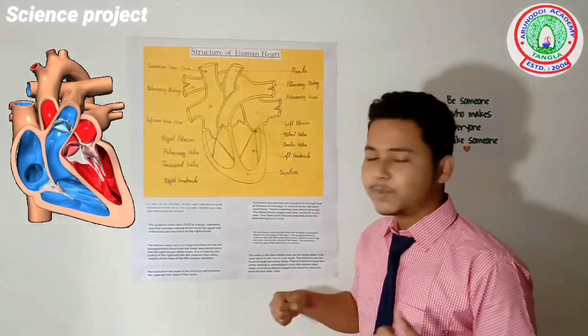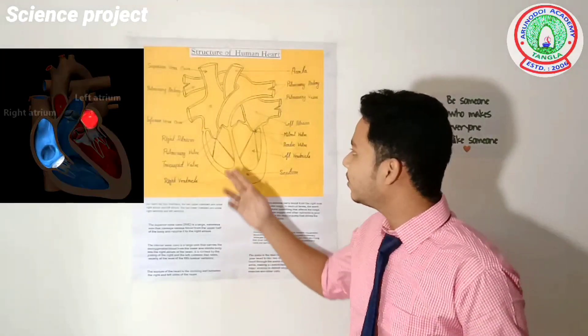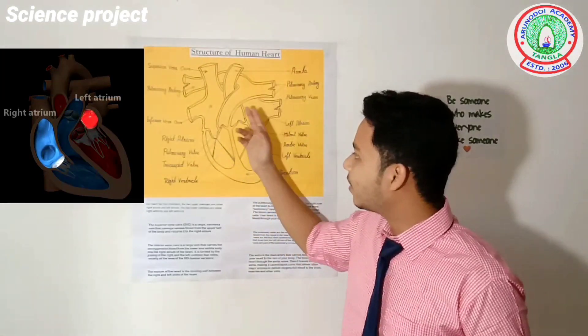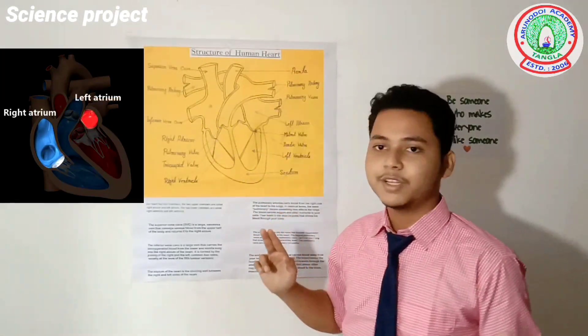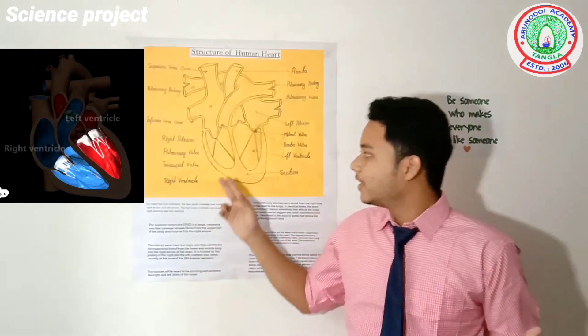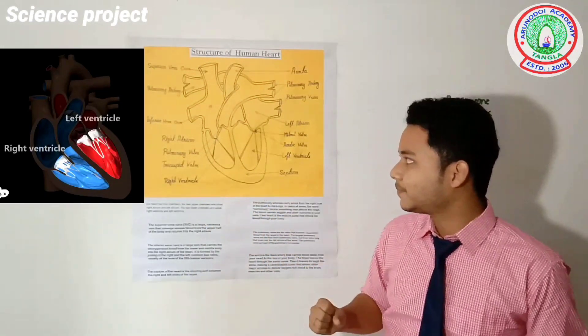The heart is basically divided into four chambers. The two upper chambers are called the right atrium and left atrium. The two lower chambers are called the right ventricle and left ventricle.